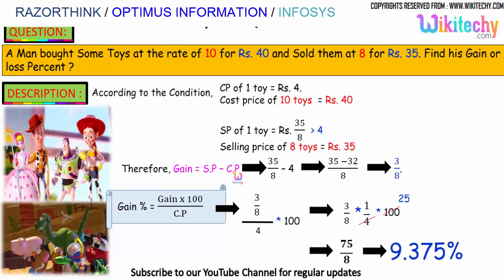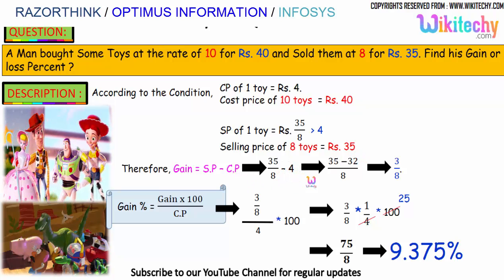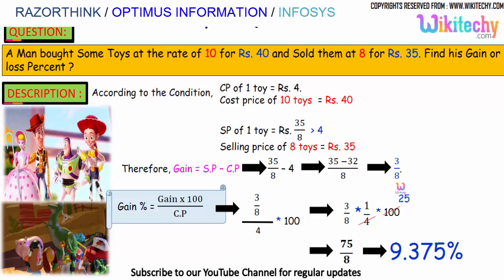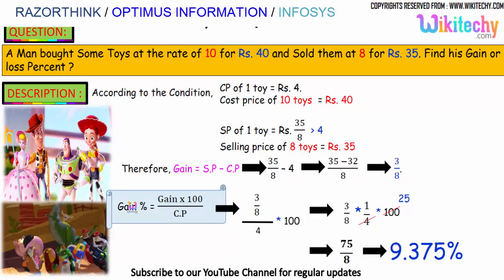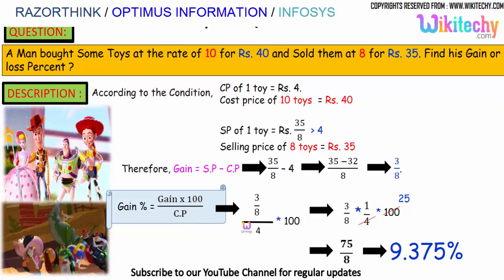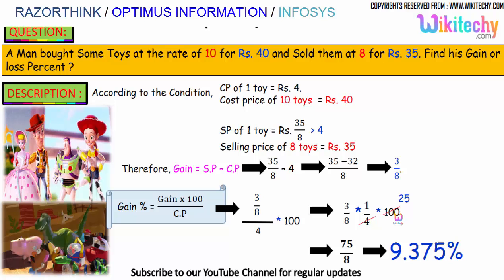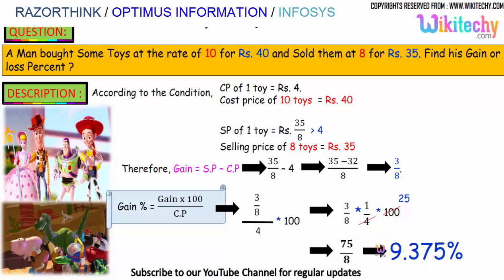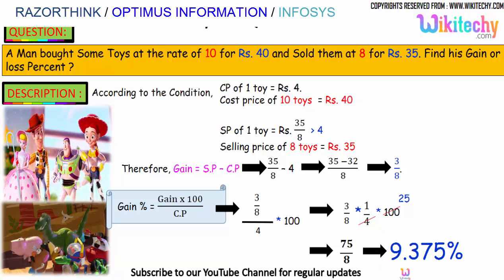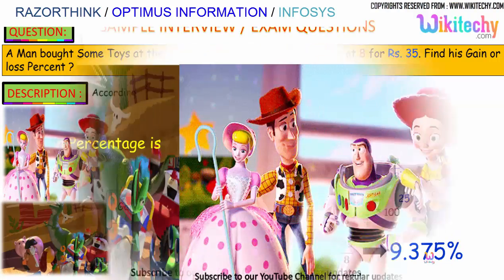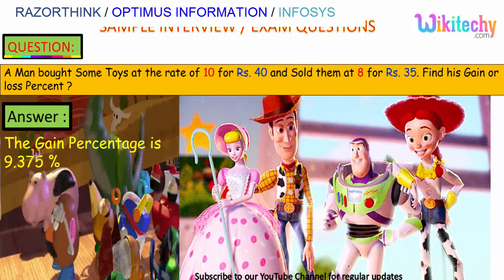Gain equals selling price minus cost price: 35 divided by 8 minus 4 gives us 3 by 8. The gain percentage is gain into 100 divided by cost price: 3 by 8 divided by 4 into 100, which gives 3 by 8 into 1 by 4 into 100, that is 75 divided by 8. So the gain percentage is 9.375%.